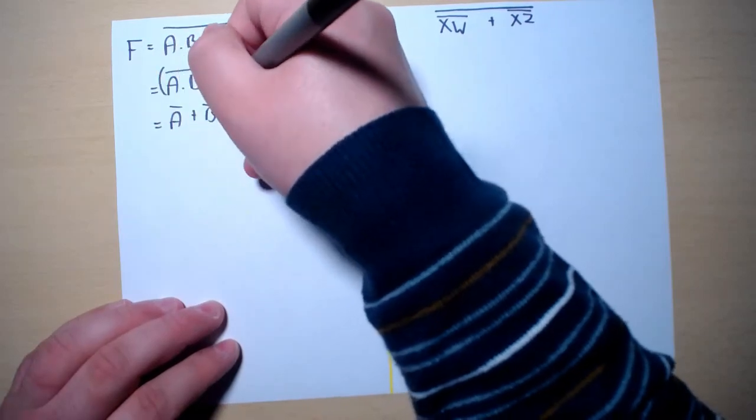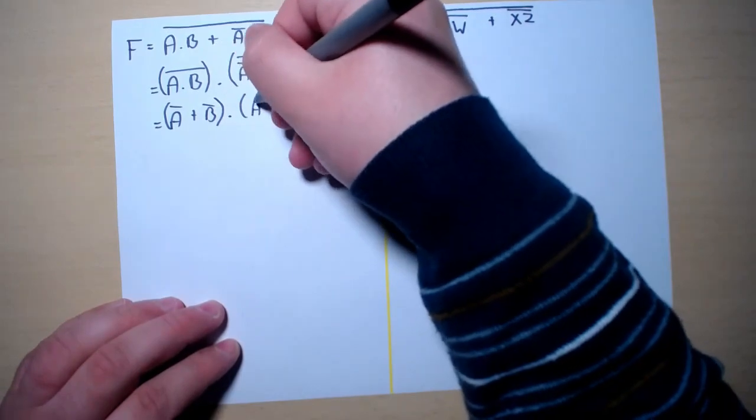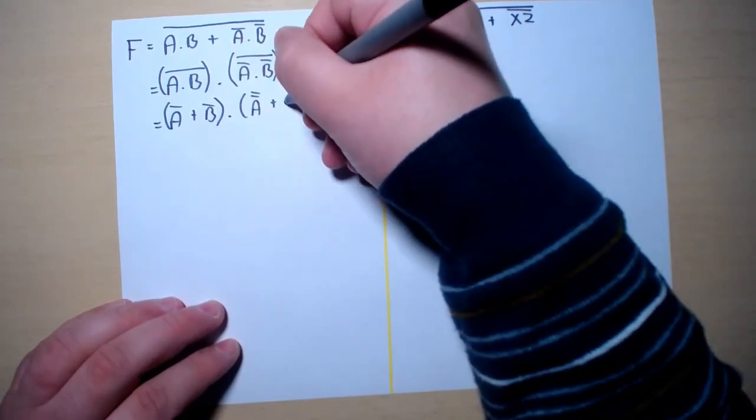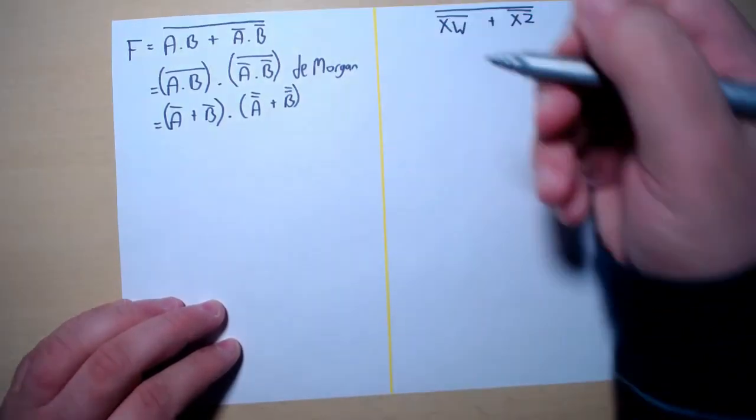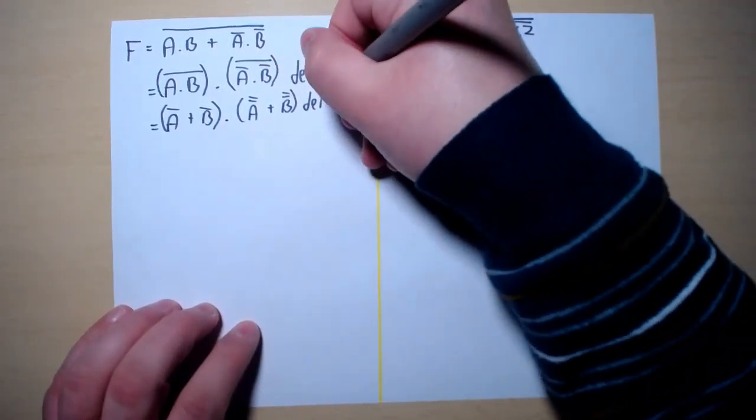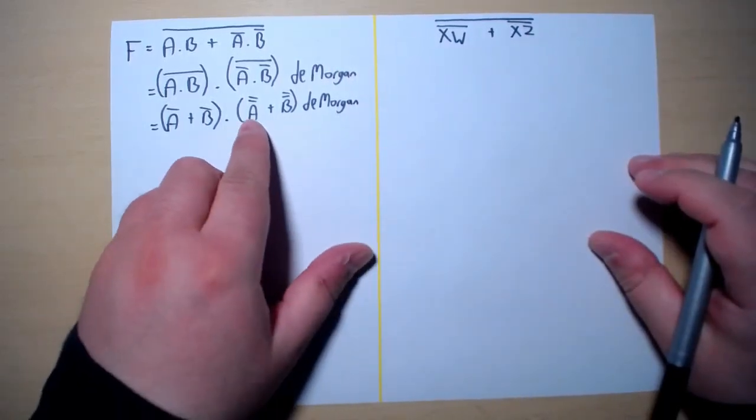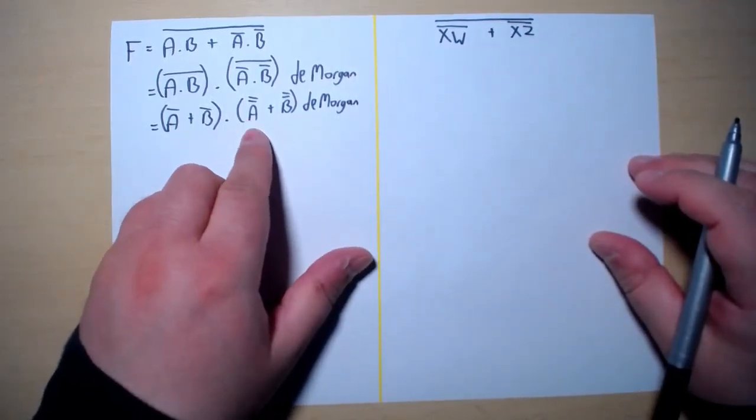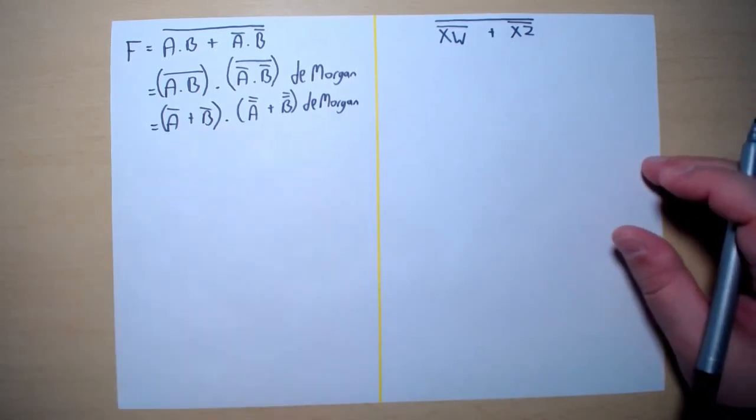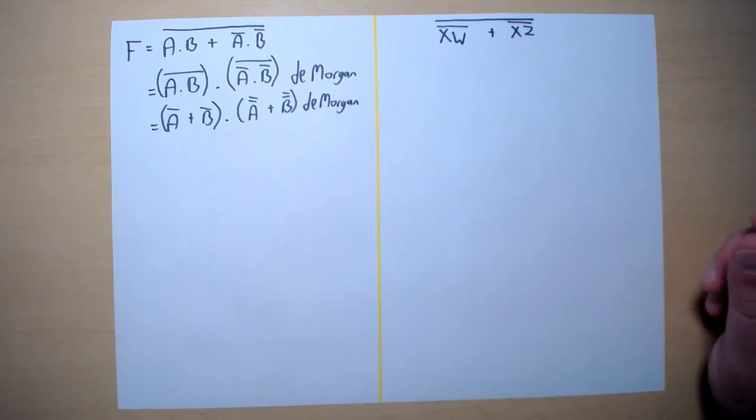So this will become A naught or B naught into A naught naught or B naught naught, and we have used De Morgan again. Now this A naught naught and B naught naught can become A or B by using the double complement law.